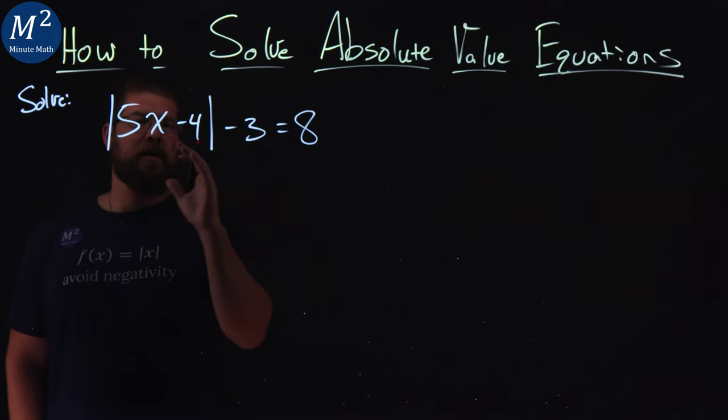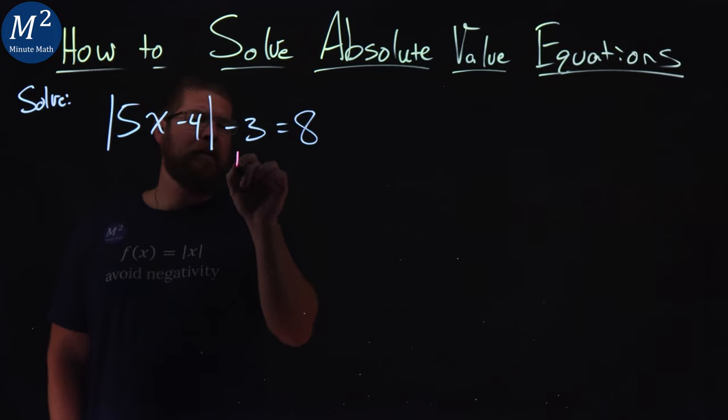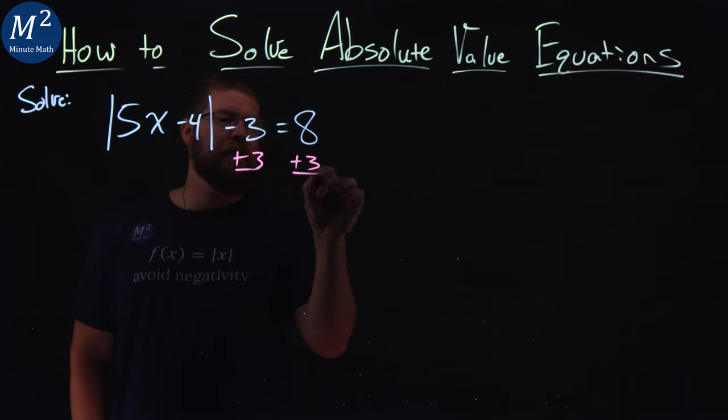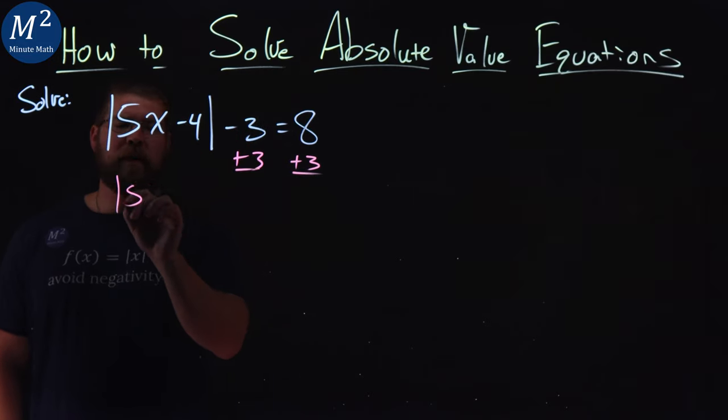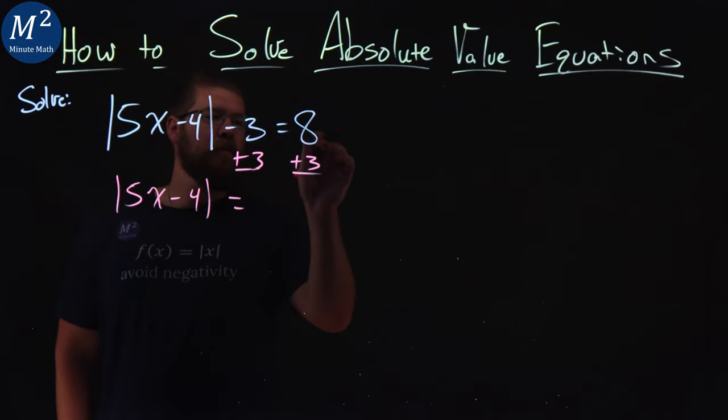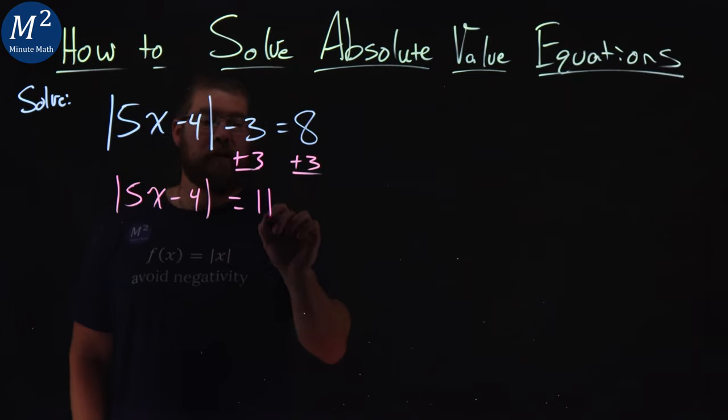So I kind of treat absolute value like a parenthesis, and we want to add a 3 and bring that over to the right-hand side. So we have absolute value of 5x minus 4 here is equal to 8 plus 3, which is 11.